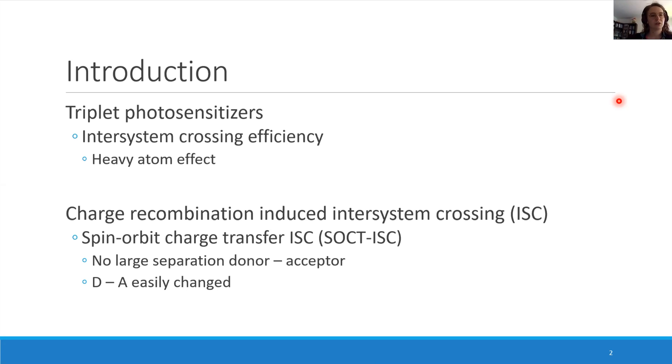It is proposed to have charge recombination-induced intersystem crossing. Previous research stated that directly connected donor-acceptor dyads can have good intersystem crossing. For these dyads, there is a requirement: they need to be orthogonal to each other, the donor and acceptor.